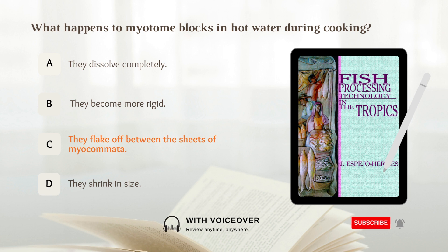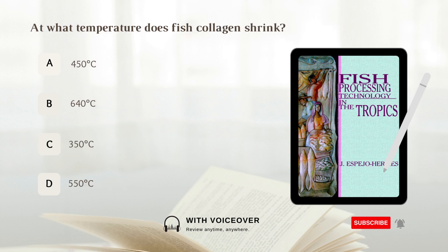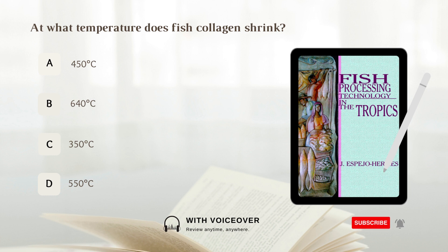Myotone blocks in hot water during cooking flake off between the sheets of myocomata. At what temperature does fish collagen shrink? A. 450 degrees Celsius, B. 640 degrees Celsius, C. 350 degrees Celsius. Answer: B. At what temperature does fish collagen shrink — at 450 degrees Celsius.